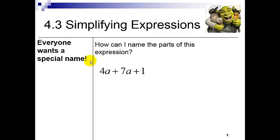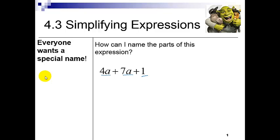Everyone wants a special name. This algebraic expression is made up of three parts. You might say: oh that's a four, that's a number, it's a whole number; that's a variable; that's a plus sign; oh that's a seven, it's also an integer; that's another variable, another plus sign; and that's just a one. But they all want extra special names because they're part of this algebraic expression.